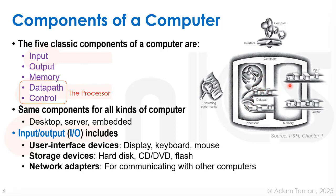We have input/output devices, which we'll discuss later in the course. These include user interface devices like the display, the keyboard, and the mouse. We have storage devices used for different types of memory — hard disks, CDs, DVDs, flash — as peripherals to the system. And of course, network adapters that enable us to communicate with other computers. Those are all going to be part of the I/O.